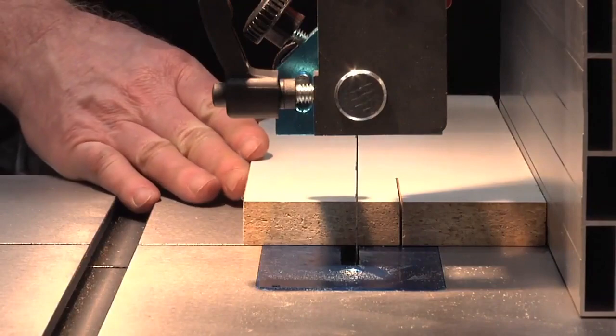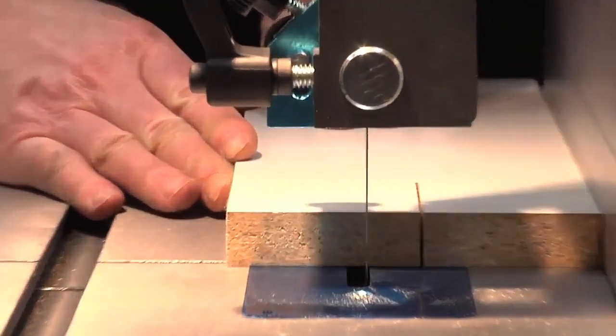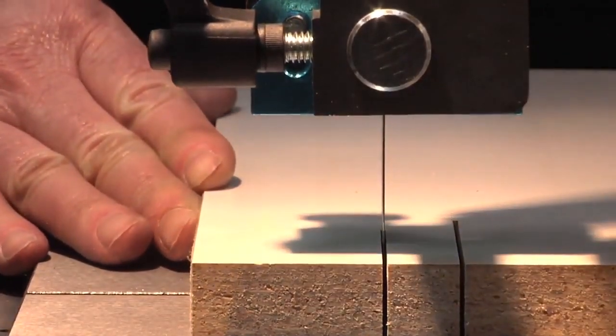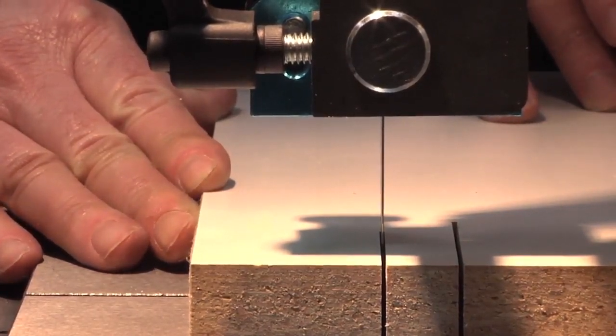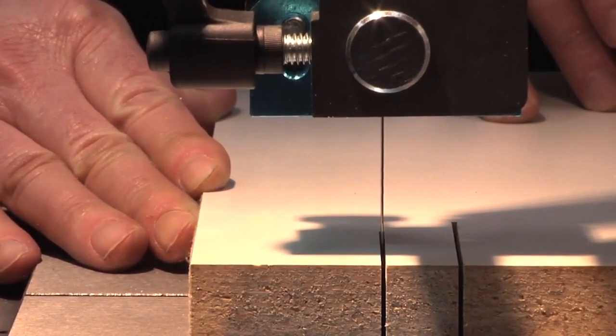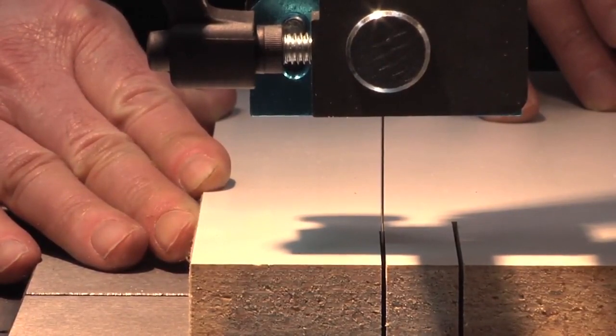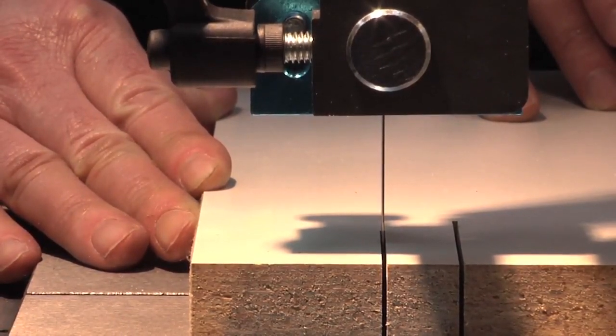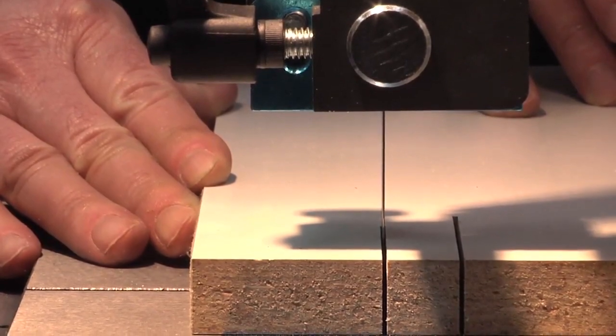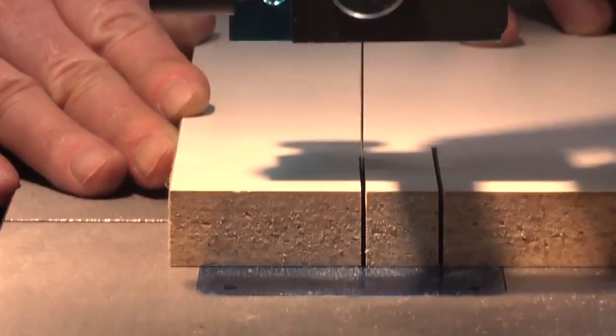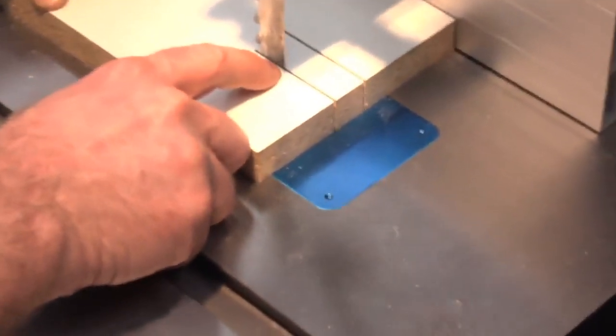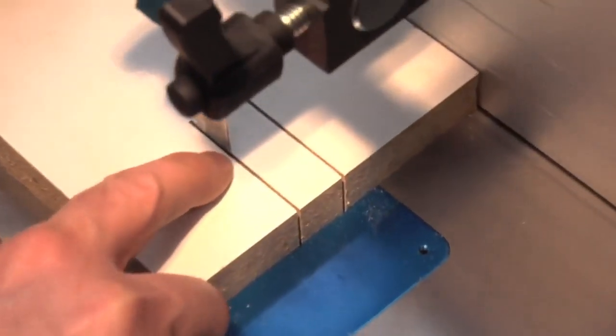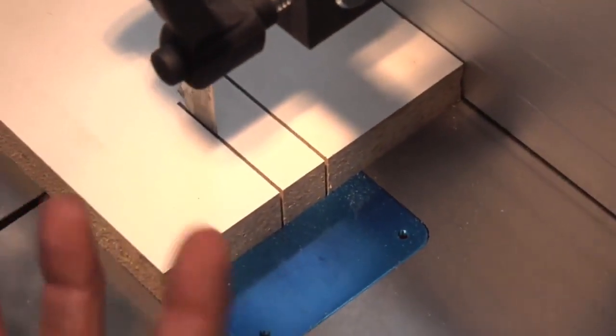I've raised the guides up so I can have a look, and now I've got the blade centered in the kerf. Again, you may have to do this process two or three times; you just want to get it even on both sides.